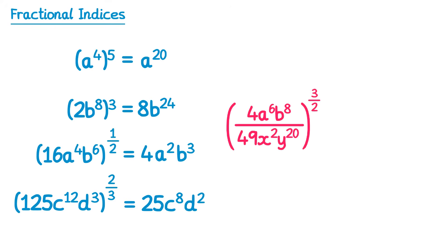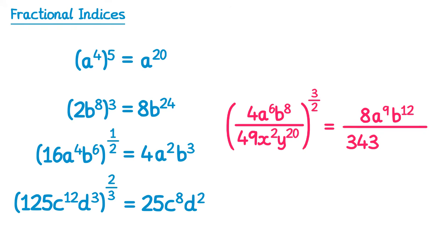You could even get a question that looks quite scary, but if you remember everything from this video we can break it down. We have a fraction raised to a power, so we raise the top and bottom separately to that power. For the top: 4 to the 3 over 2 — square root of 4 is 2, then cubed is 8; then 6 times 3 over 2 is 9 and 8 times 3 over 2 is 12, giving 8a to the 9, b to the 12. For the bottom: 49 to the 3 over 2 — square root of 49 is 7, cubed is 343; then 2 times 3 over 2 is 3 and 20 times 3 over 2 is 30, giving 343x to the 3, y to the 30.